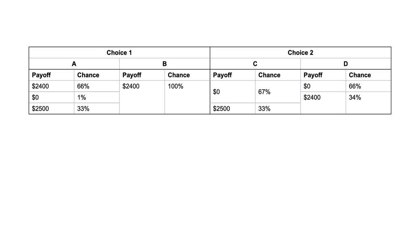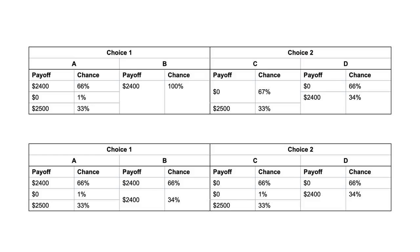Bet B involves a 100% chance of $2,400. I can then break up these payoff-chance pairs to create an equivalent representation in a second table. I have split the outcomes in bets B and C. For example, I have written the 100% chance of $2,400 in option B as a 66% chance of $2,400 and a 34% chance of $2,400. I have written the 67% chance of $0 in bet C as a 66% chance of $0 and a 1% chance of $0.